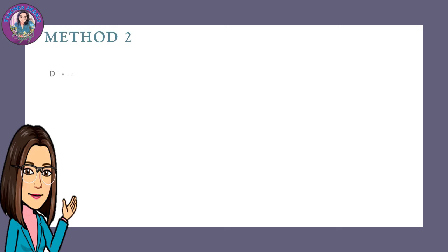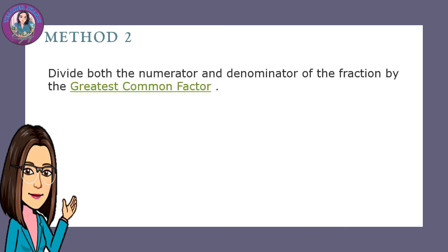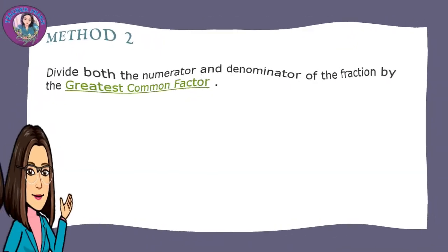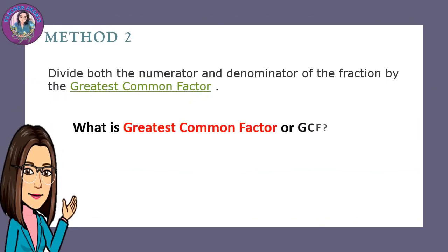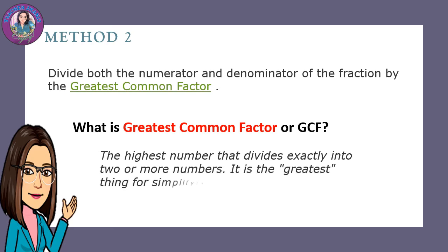Method 2: Divide both the numerator and denominator of the fraction by the greatest common factor. When we say greatest common factor, we have to work it out first. What is greatest common factor or GCF? The highest number that divides exactly into two or more numbers. It is the greatest thing for simplifying fractions.